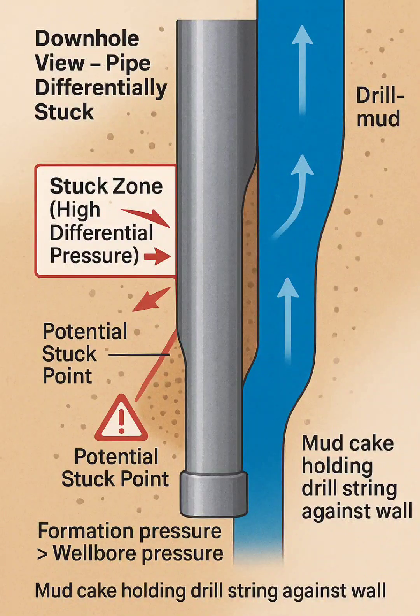Drill pipe (gray metallic): The drill string is shown pressed tightly against one side of the wellbore wall. This contact area represents where the pipe becomes stuck.